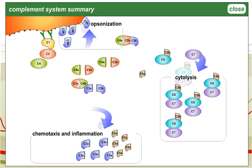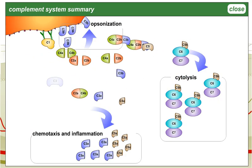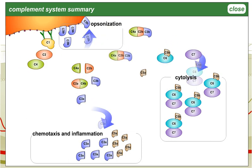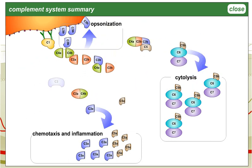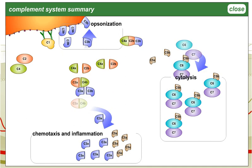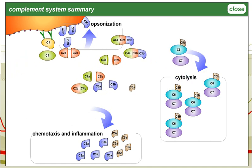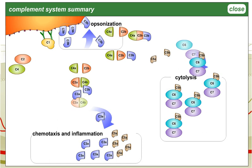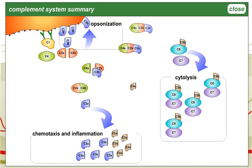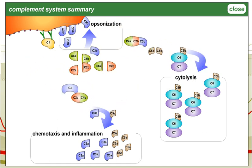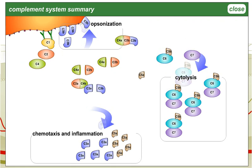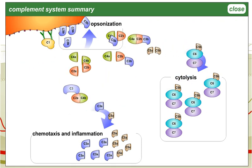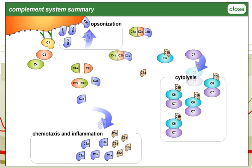The complement system is composed of several proteins that circulate in the blood serum. Activation of the complement system initiates a cascade of events that aids in the destruction of invading organisms. The complement system helps induce the inflammatory response and produces opsonins and chemotactic factors that aid in phagocytosis. Components of the complement system also directly attack the cell membranes of microorganisms, causing cytolysis.